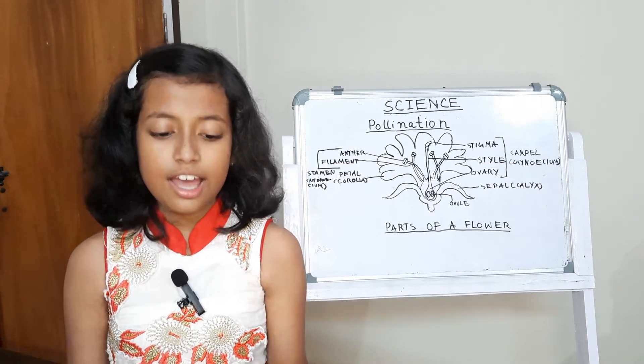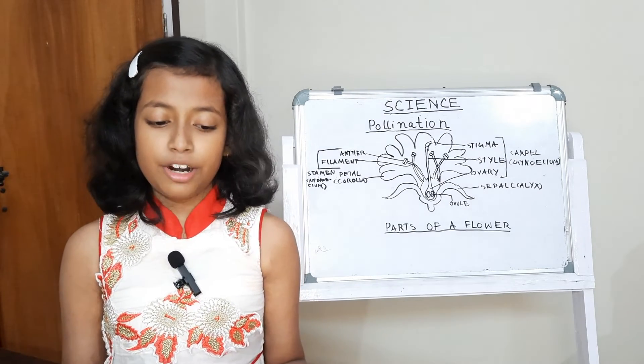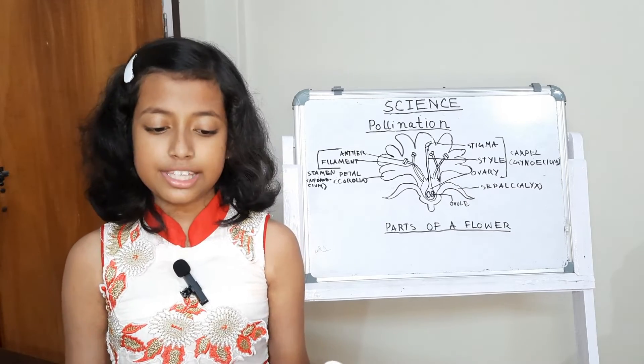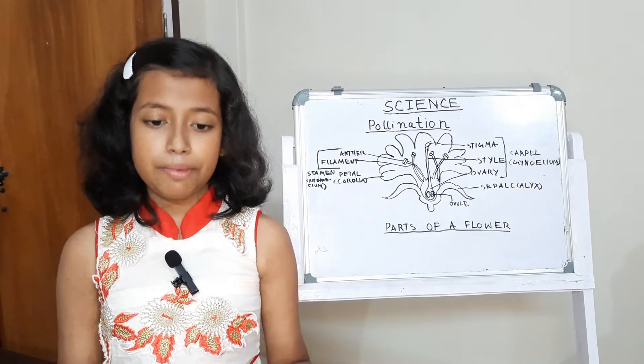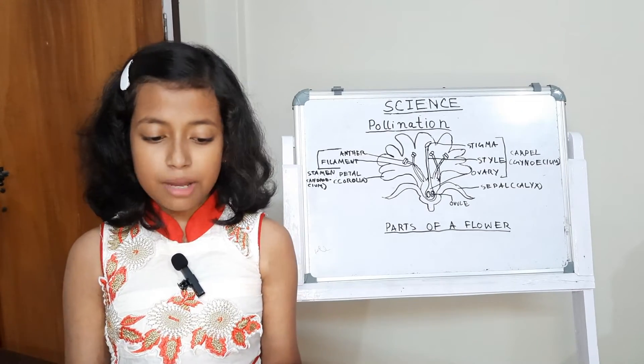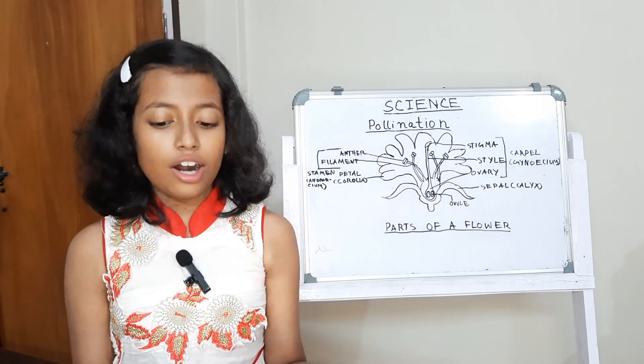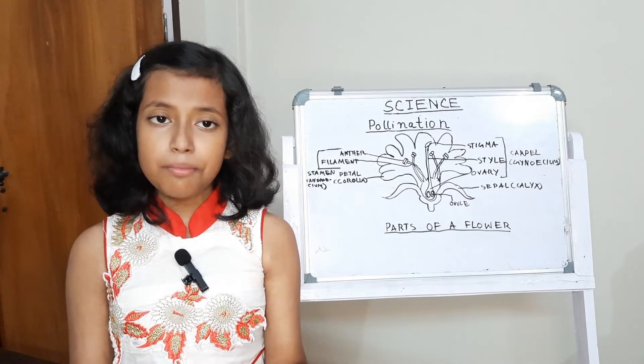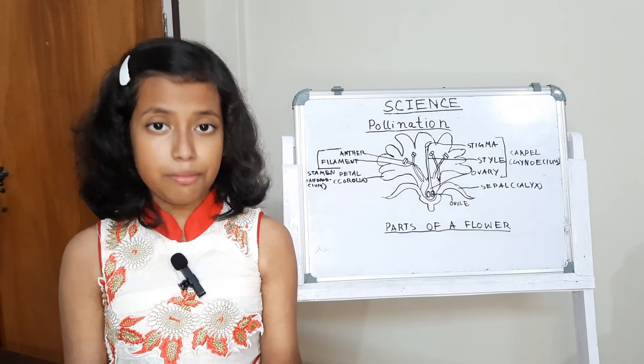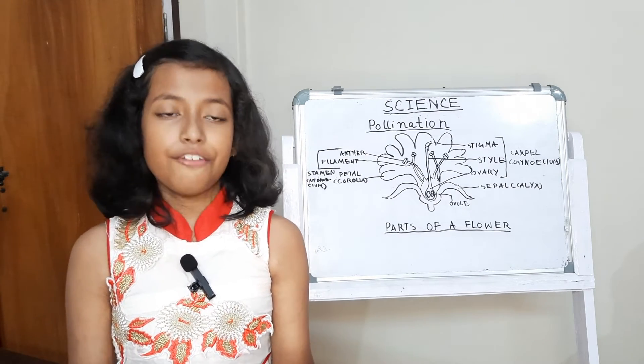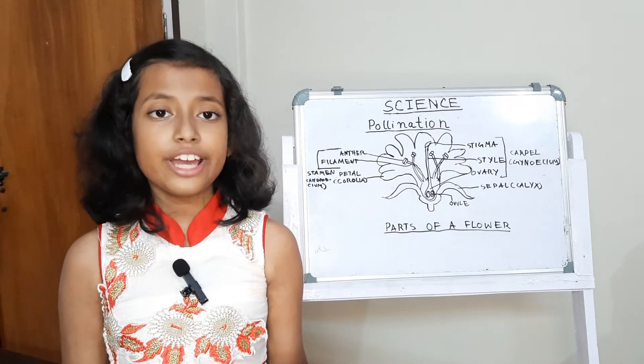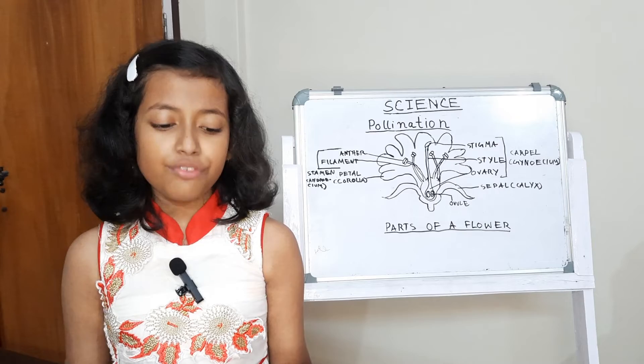Process of pollination. Anther of a flower produces pollen grains which contain male reproductive cells called gametes. These pollen grains may be carried by either wind, water or insects and may fall on the stigma of the same flower or another flower of the same kind. From stigma, they reach ovary through the style. Inside the ovary, male and female gametes fuse together and reproduction takes place. This results in the formation of fruit from the ovary and seeds from the ovule of a flower.